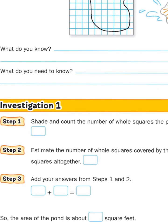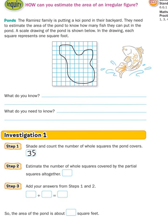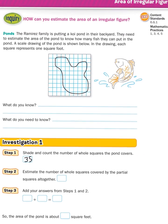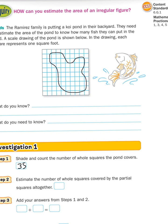Remember, if you get something a little bit off it's not a big deal. I'll write down 35. Now here's what step two means — estimate the number of whole squares covered by partial squares. I'm going to go through and look at these little pieces and try to put pieces together that would equal a whole square.